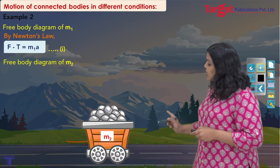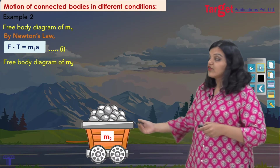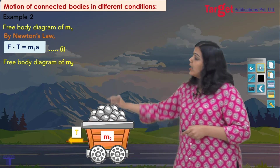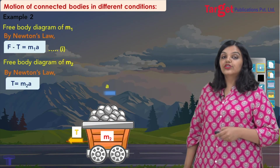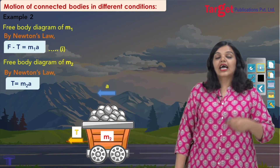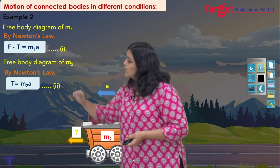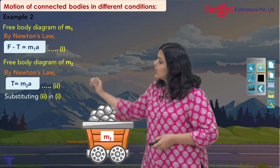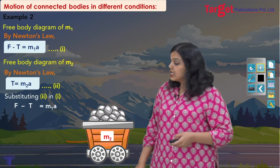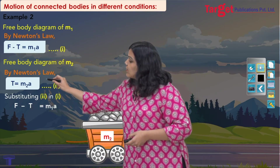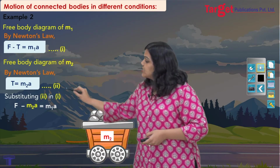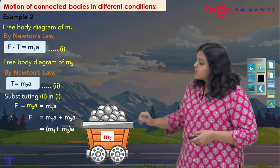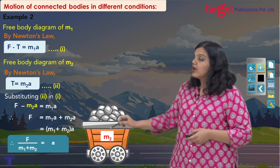For the second free body diagram, looking at m2 in isolation: the only force acting on m2 is the tension of the string acting towards the left. Applying Newton's law gives T equals m2a. I have these two equations of motion, and as before I substitute the expression for T into equation 1. Rewriting equation 1 — F minus T equals m1a — replacing T with the expression from equation 2, I get an expression for acceleration: a equals F divided by (m1 plus m2).